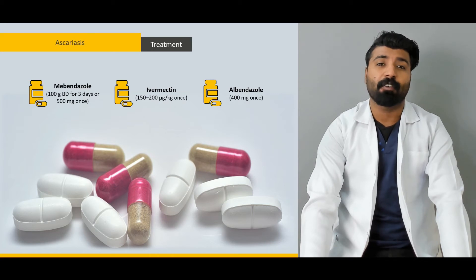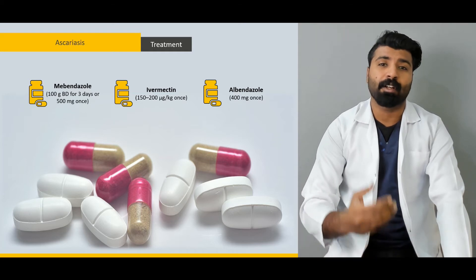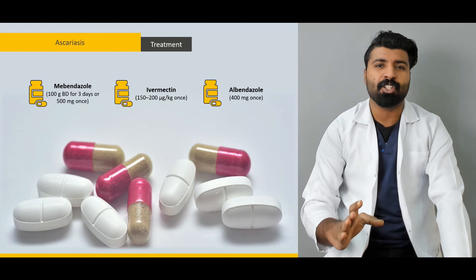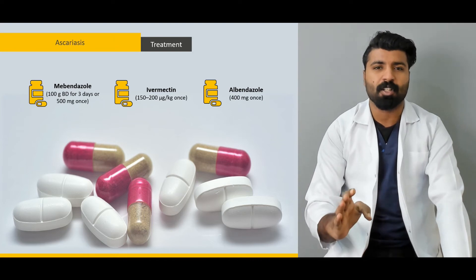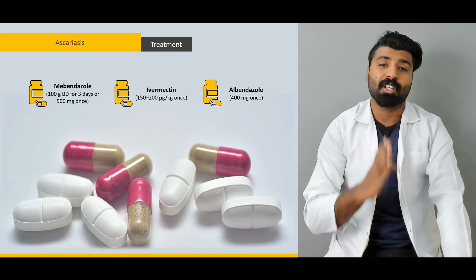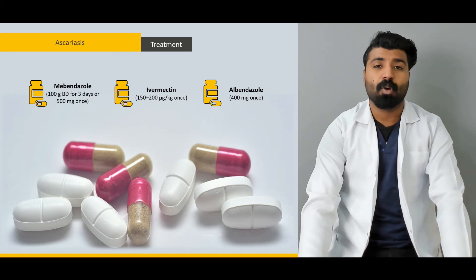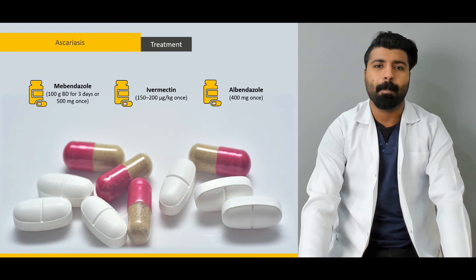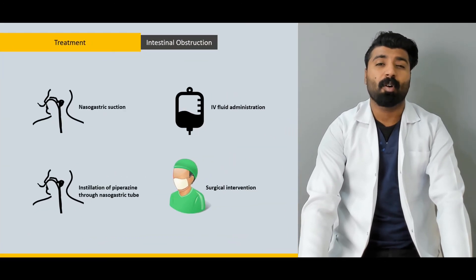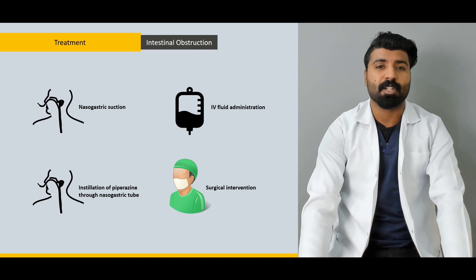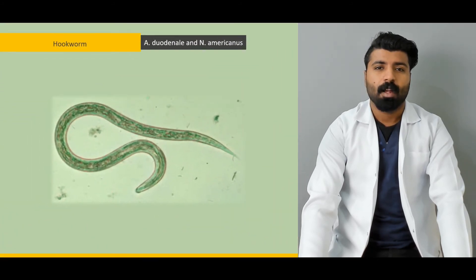Next, we're going to talk about treatment. We'll cover different treatment modalities, including various drugs. If the infection is severe and intestinal obstruction is occurring, surgical intervention is required. If the patient is mild to moderate in severity, three specific drugs are given. We'll also discuss preventive methods and the treatment options for a patient who has developed intestinal obstruction.